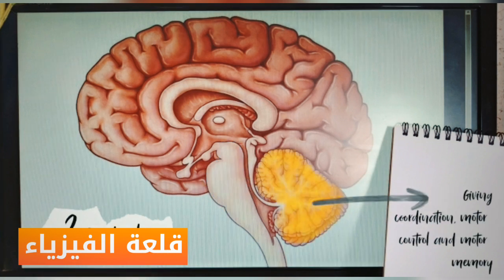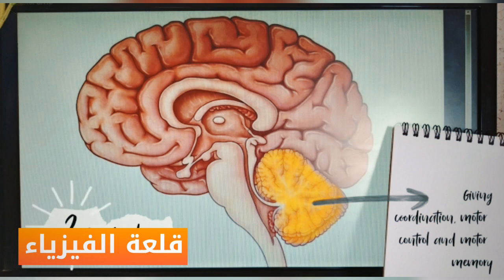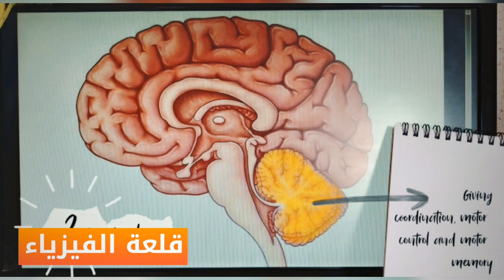Two, the cerebellum. It gives you coordination and motor control. For example, if you're doing sports, the cerebellum is the one giving you that coordination. It also gives you motor memory. So as you learn to ride a bicycle and remember how to do so, it's thanks to your cerebellum.